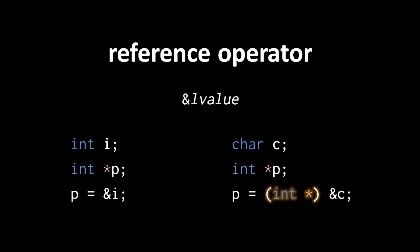However, because all pointers are addresses, and addresses in a single program are ultimately all the same kind of underlying data, a pointer of any type can always be cast to any other kind of pointer. Here we cast the char pointer value to an int pointer, and so the compiler accepts this assignment. As we'll discuss shortly, pointer conversions like this can lead to nasty bugs if you're not careful.